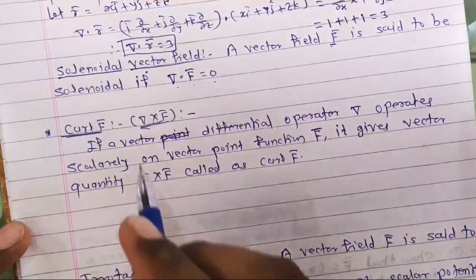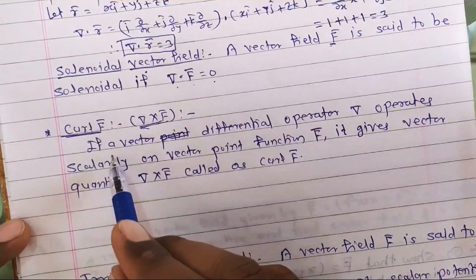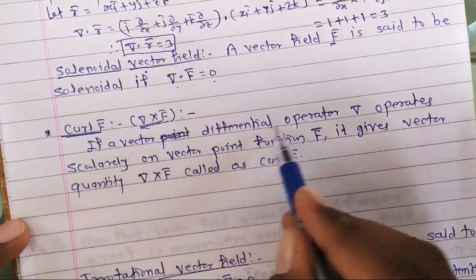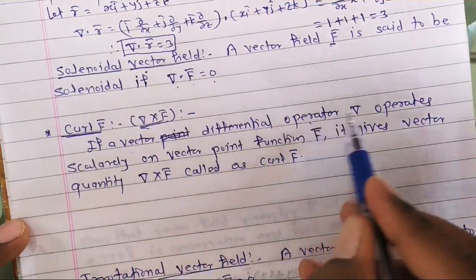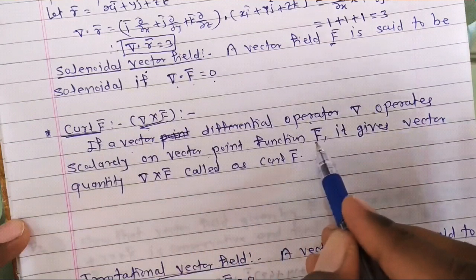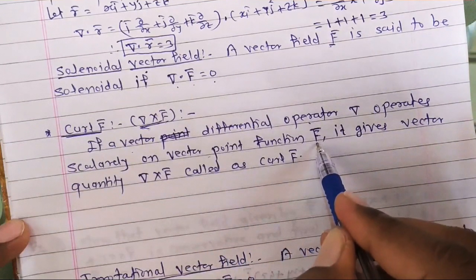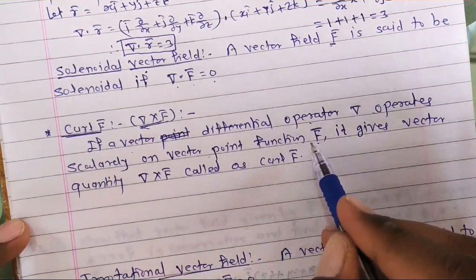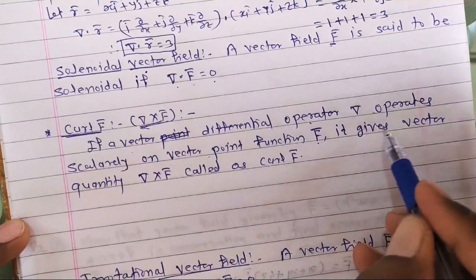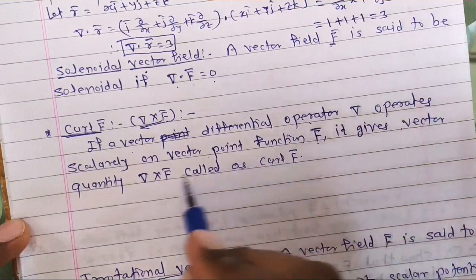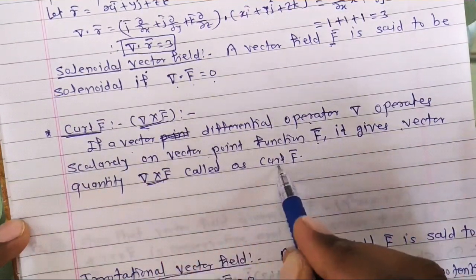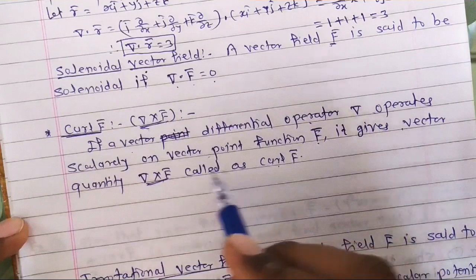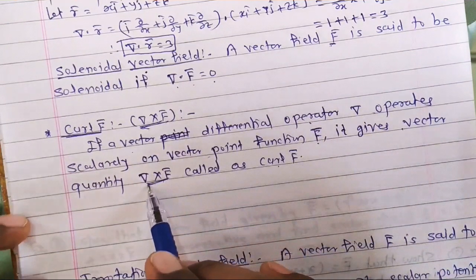So what is curl of F̄? If a vector differential operator del operates via cross product on vector point function F̄, it gives a vector quantity. Del cross F̄ is called the curl of F̄. Since del is a vector and F̄ is a vector, the cross product of two vectors gives a vector quantity.